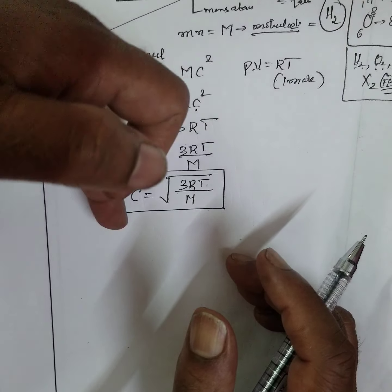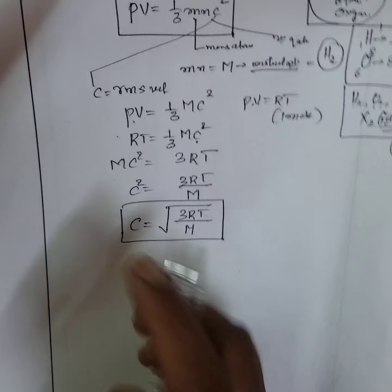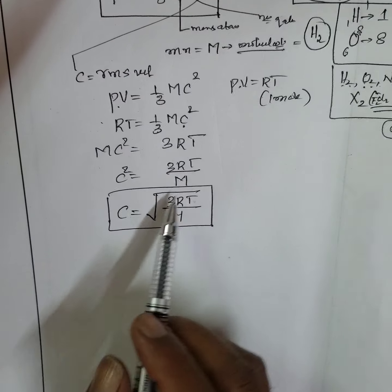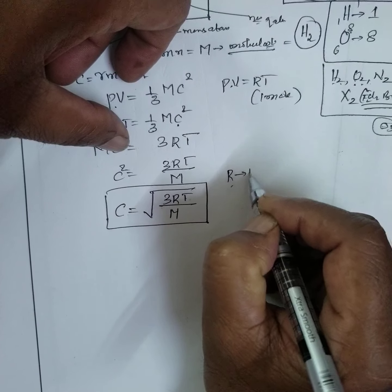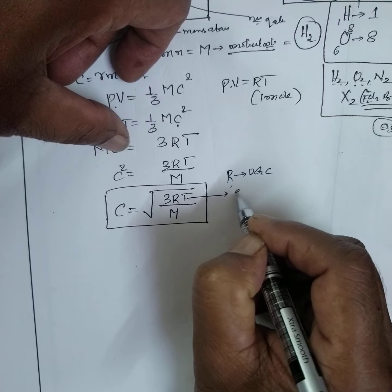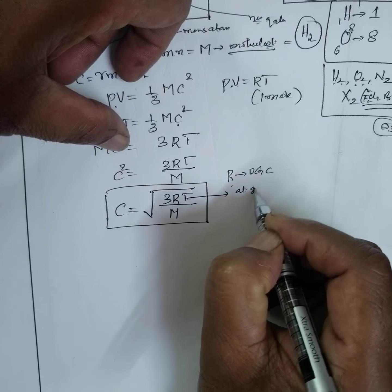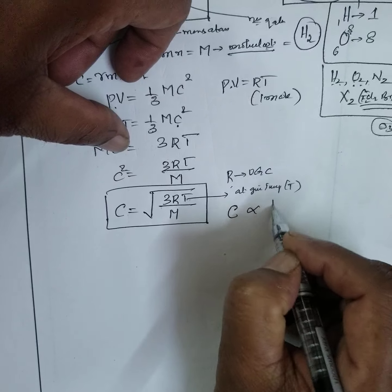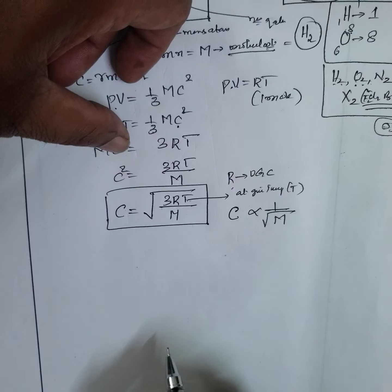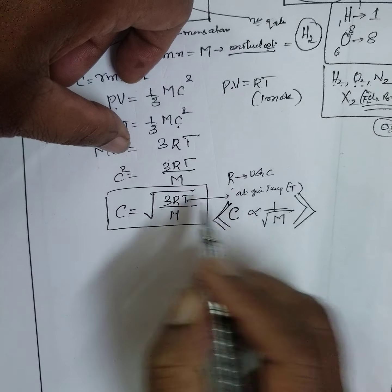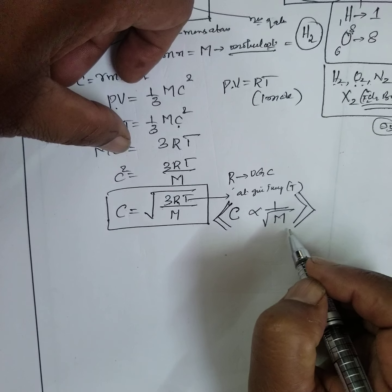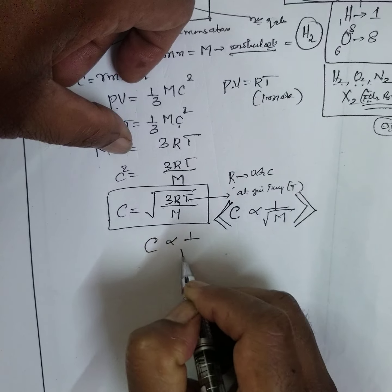If you can't remember it, write it out slowly and practice before exams. In this formula, R is the universal gas constant. At a given temperature, since R and T are constant, c is inversely proportional to the square root of molecular weight M. This key relationship — c ∝ 1/√M at constant temperature — is very important.